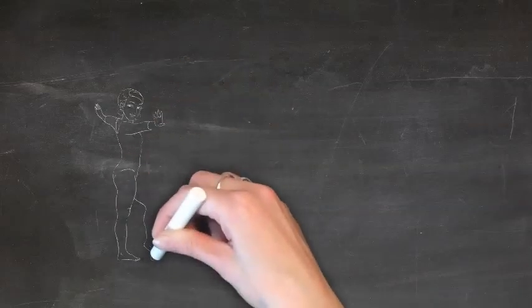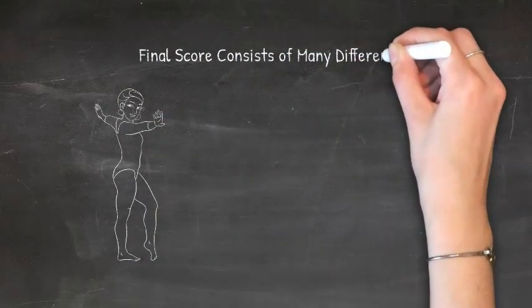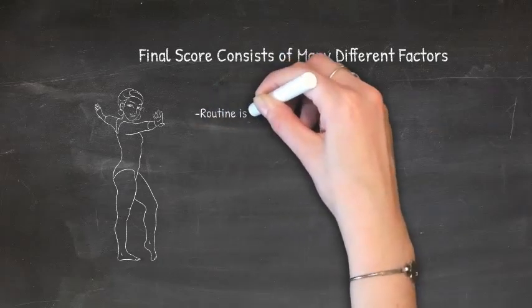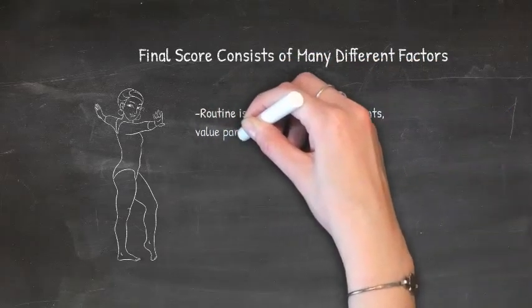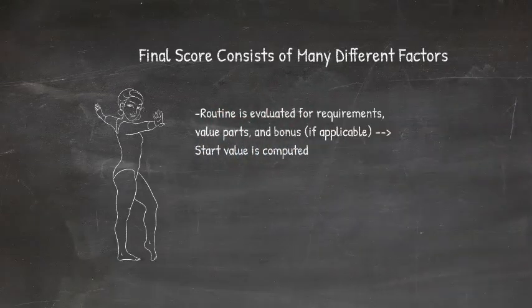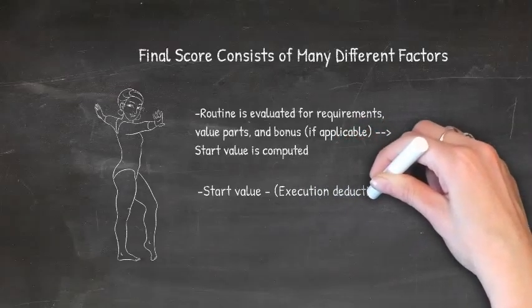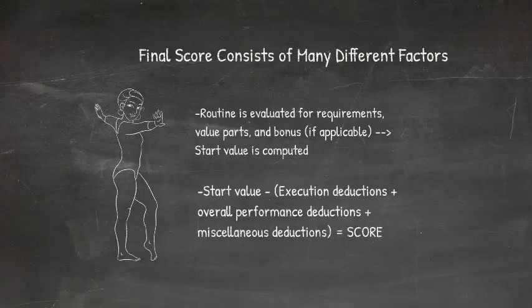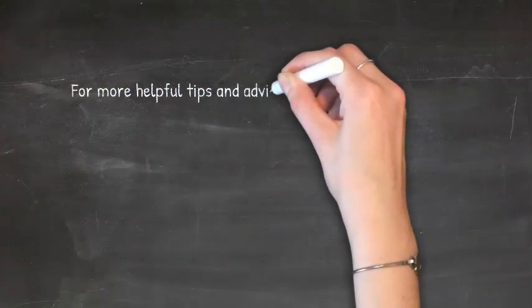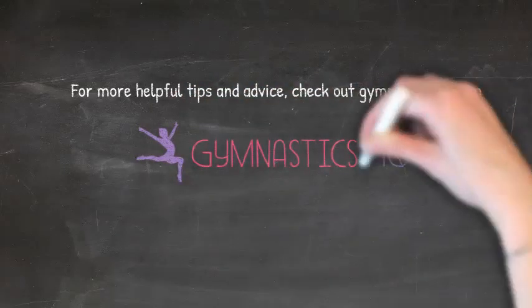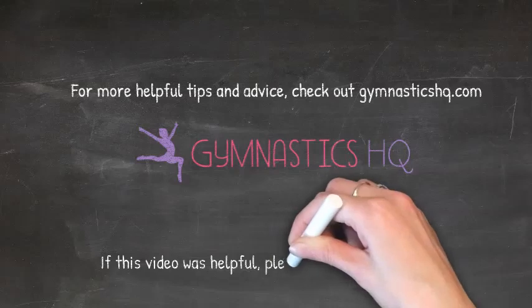As you can see, there are many components to a gymnastics score. First, the routine is evaluated for requirements to determine the start value. Then execution deductions are taken and the overall performance is evaluated. Then any miscellaneous deductions are taken. The deductions are added up and subtracted from the start value to determine the final score. Hopefully this was helpful and gives you a better idea of what judges are looking for. If you found this video helpful, please share it with others.